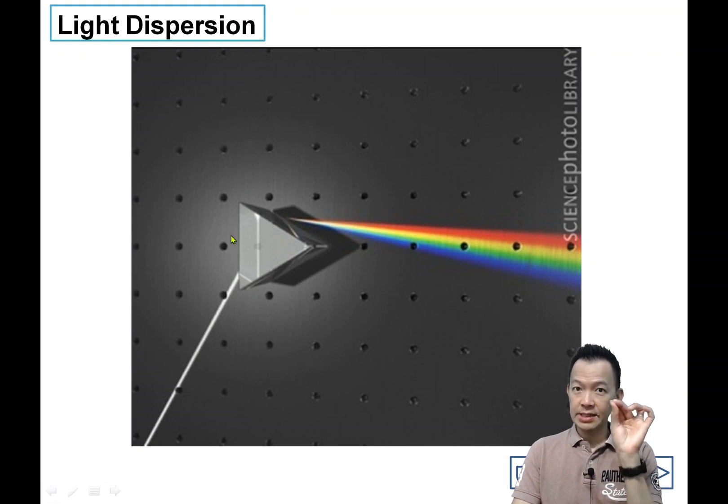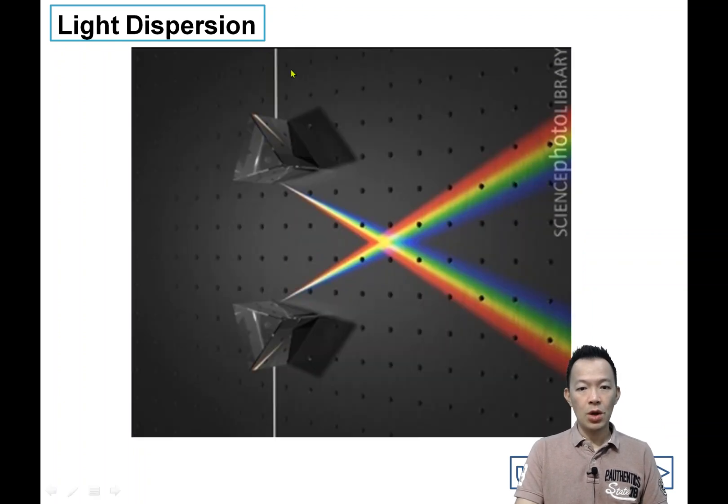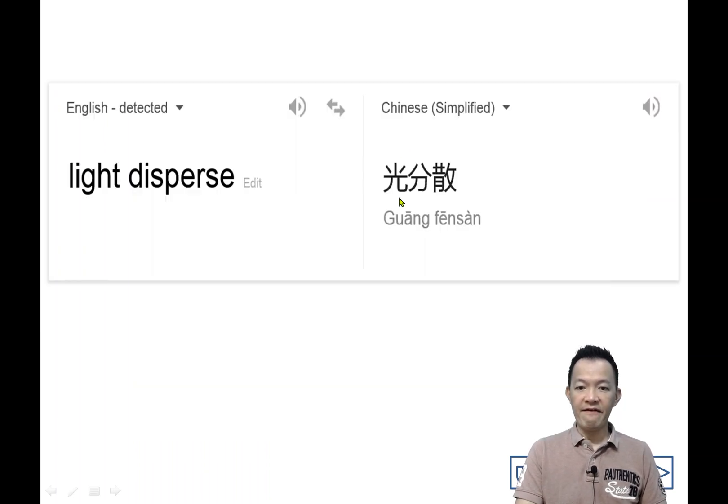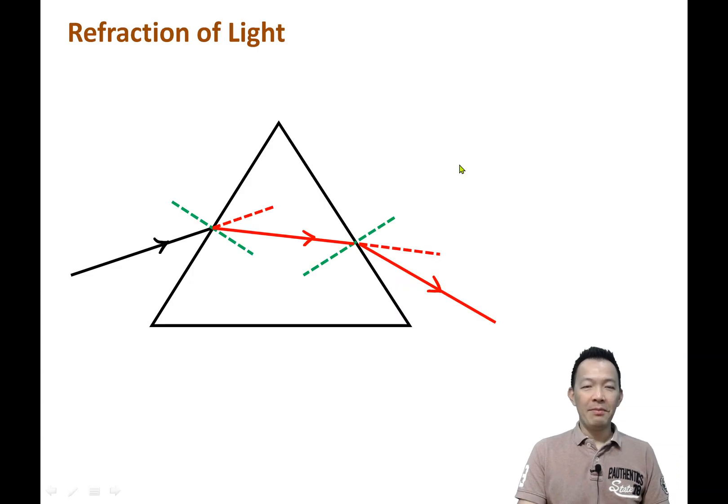White light actually contains seven colors, and the seven colors can be dispersed. This process is called light dispersion. But why can light be dispersed?